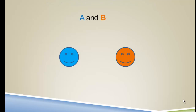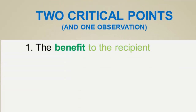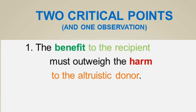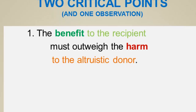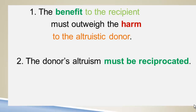When we add those up, it works out that blue and orange both benefit more than they're harmed. There are two critical points to stress: first, the benefit to the recipient must outweigh the harm to the altruistic donor — if this isn't the case, the model doesn't work. Second, the donor's altruism must be reciprocated — if that doesn't happen, the model doesn't work.